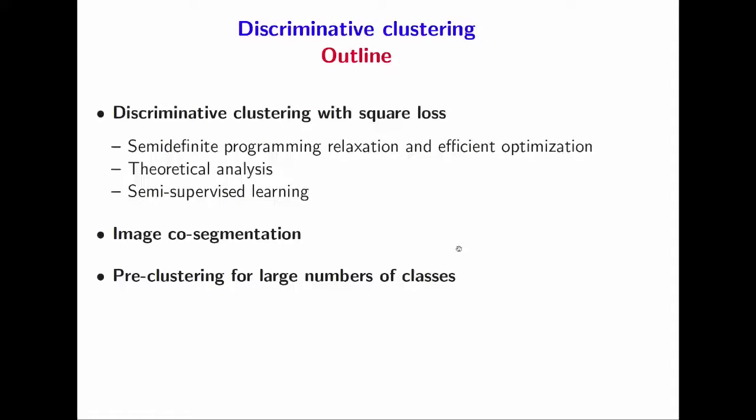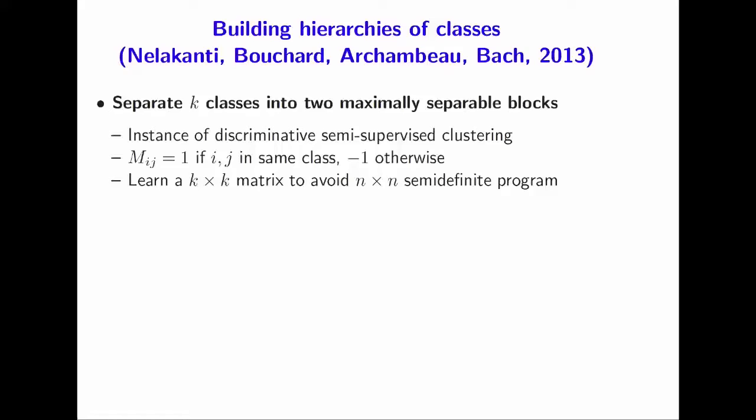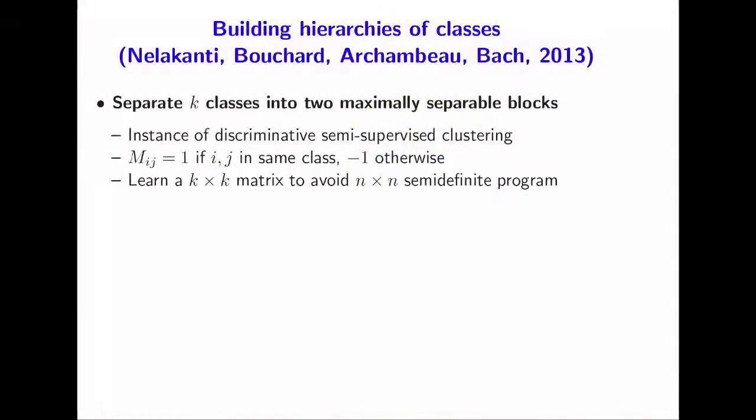Now let's go to the topic of the workshop: pre-clustering for large numbers of classes. The idea is to build a hierarchy of classes on top of your classes. Say you have one million classes — it's a problem at many levels: at training time you have to find one million predictors, and at test time your classifier has complexity linear in the number of classes. One simple way to lower the complexity is to divide the set of classes into small pieces. You split into two sets of classes that are well-separated, then split again in two, and at the end you hope to get logarithmic complexity in terms of the number of classes.